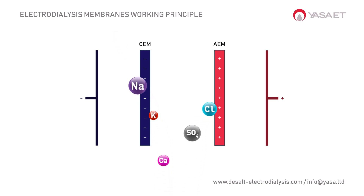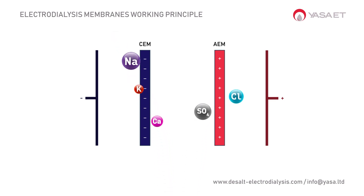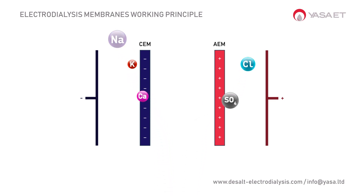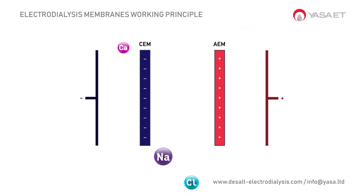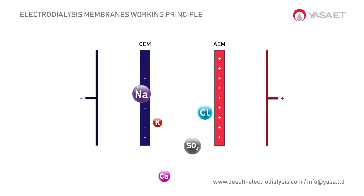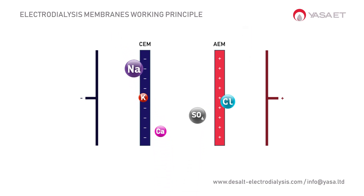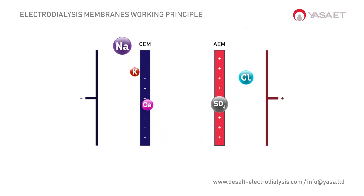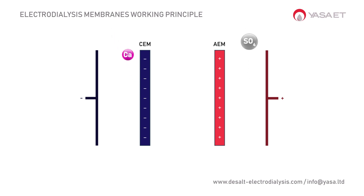By alternating layers of anion and cation exchange membranes in a repeating sequence, we can build commercial scale membrane stacks that are widely used in water desalination processes.